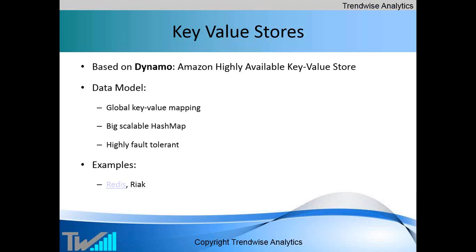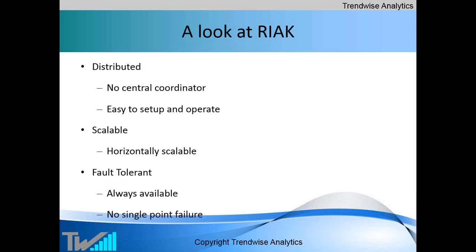These databases are based on Amazon's Dynamo, and as the name suggests, they have a very simple data model. There is a key and a value — when storing information, you generate the key and store the value. The value can be anything and can store any information. This type of database is highly scalable and very fault-tolerant, which means there is redundancy. If it is in a cluster and one or two nodes go down, you don't lose the data.